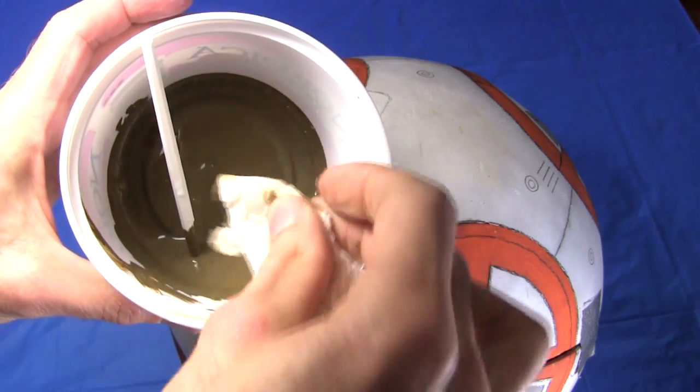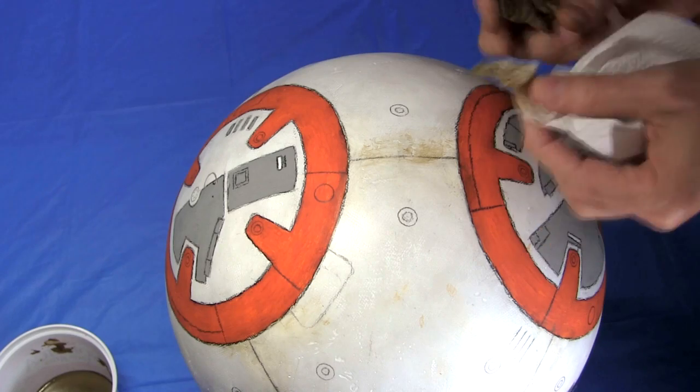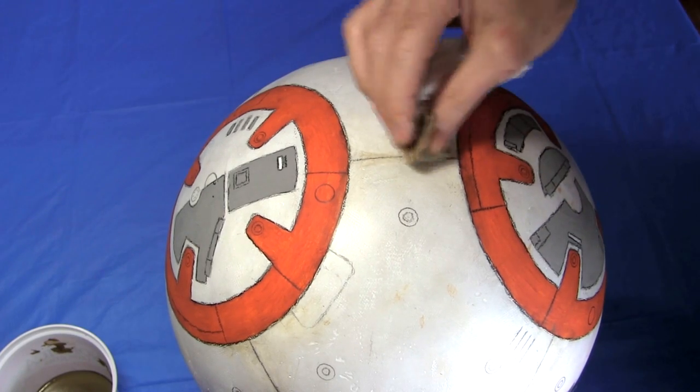To further weather it I mixed up various acrylic paints with a lot of water. And using a paper towel I sponge it on. Mostly around the lines between the circles.